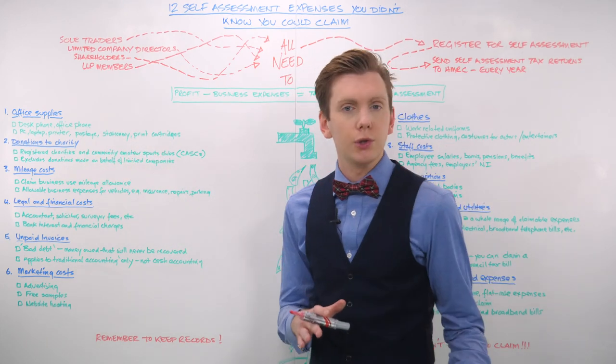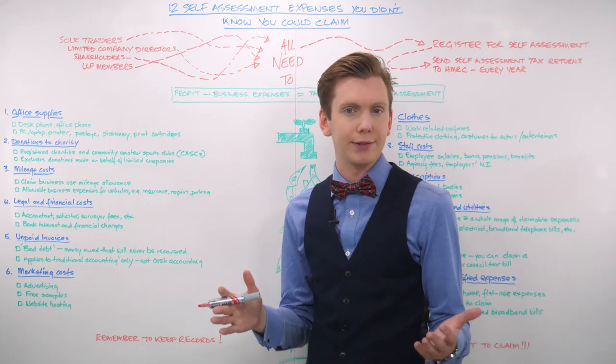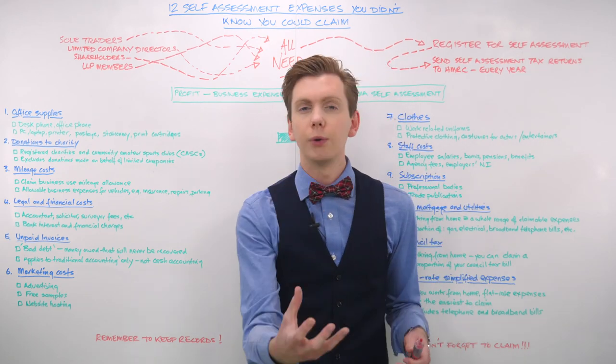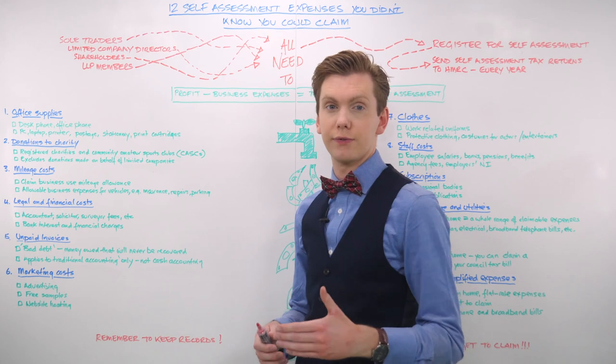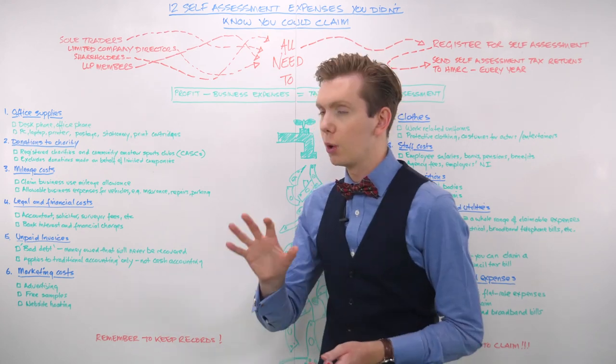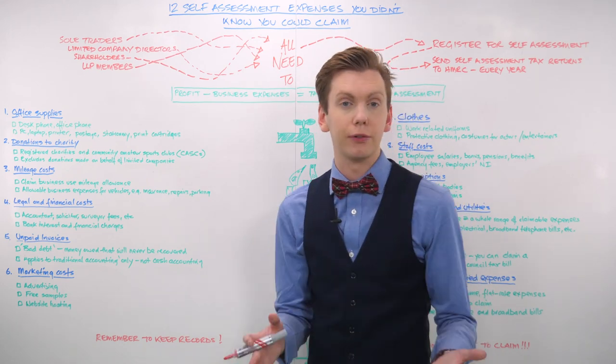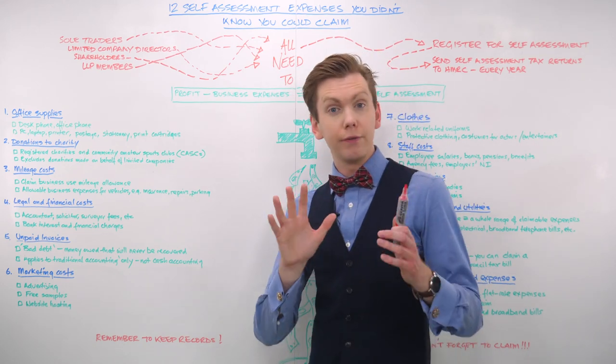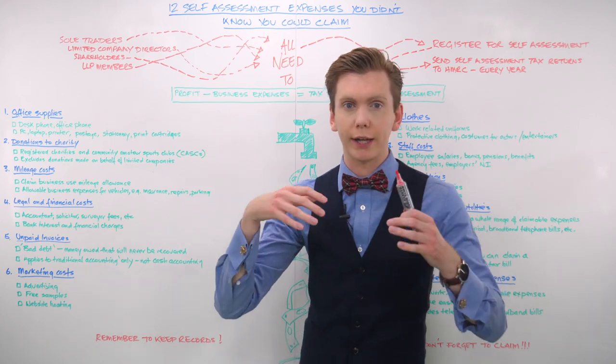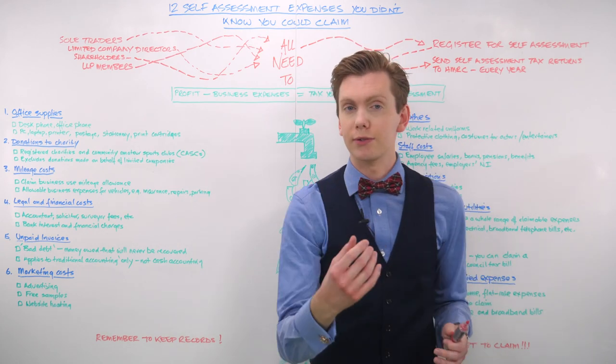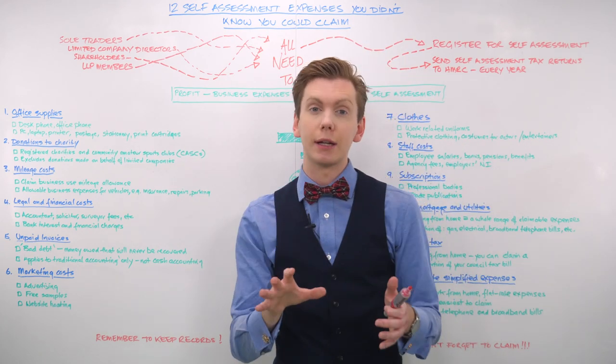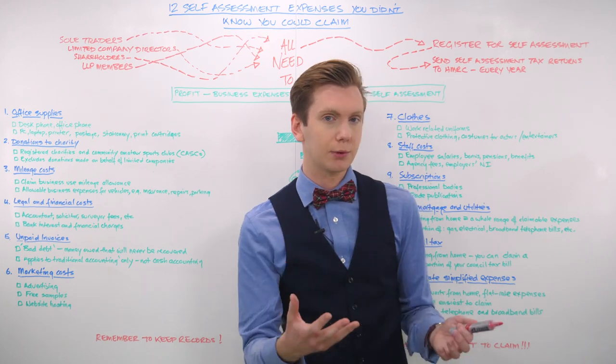That means if you have purchased a family computer in the previous tax year that you're only using for business 50% of the time, well then you can claim that cost of that computer as a business expense on a pro rata basis. For some bigger items like computers or expensive software, you may find you need to claim these expenses as capital allowances.